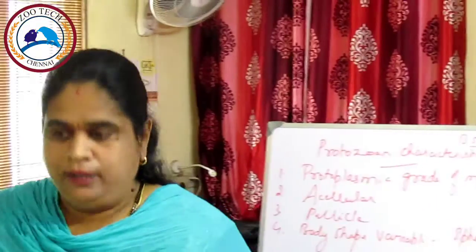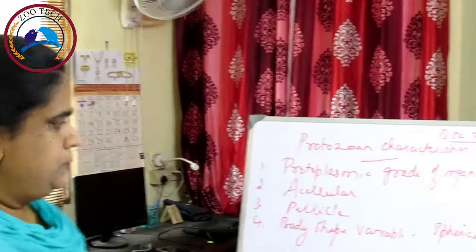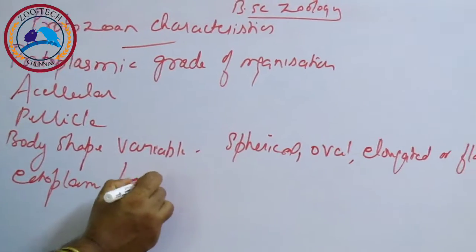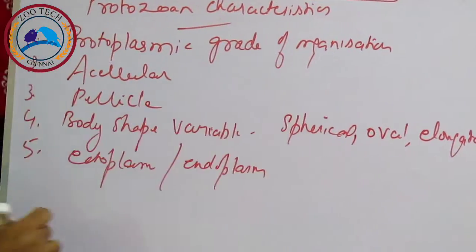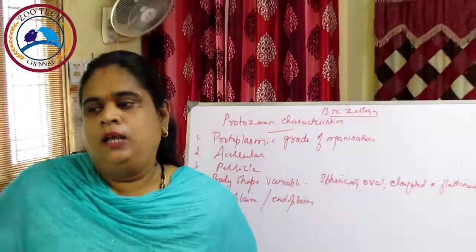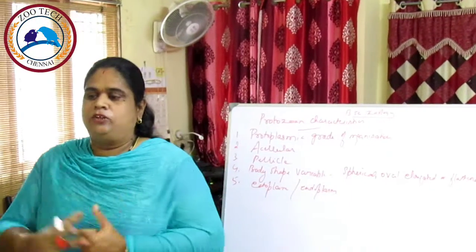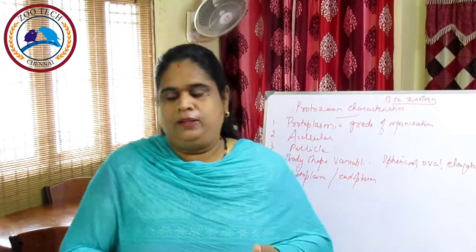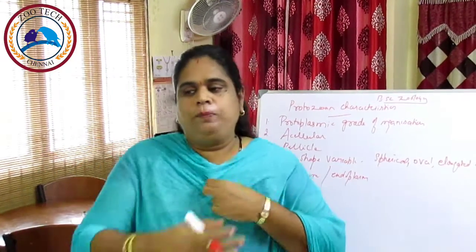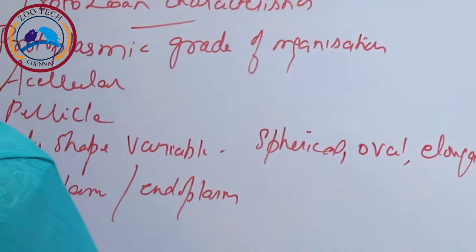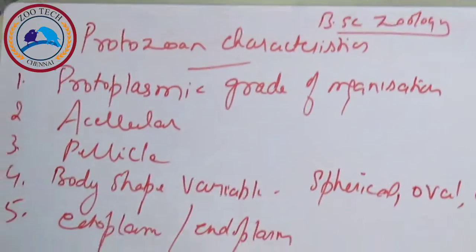Body protoplasm is differentiated into outer ectoplasm and inner endoplasm. Ectoplasm refers to the outer lining of the cytoplasm, which is watery and adjacent to the plasma membrane. Endoplasm refers to the inner dense part of the cytoplasm.